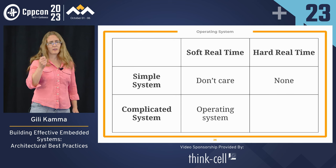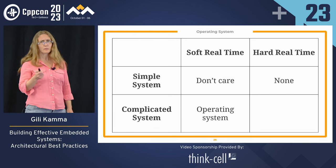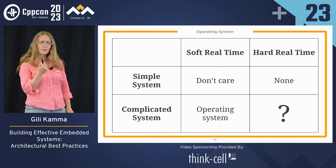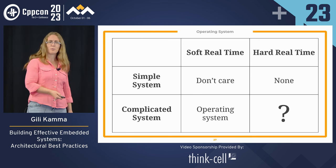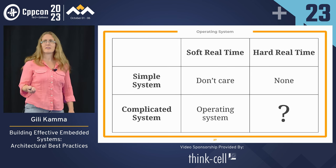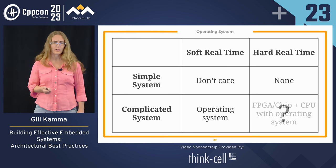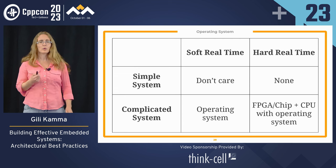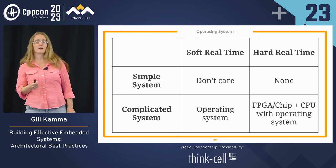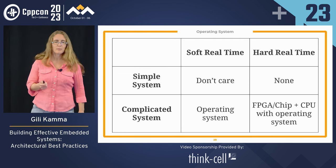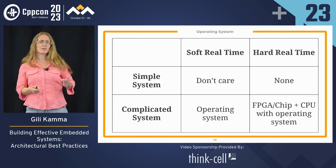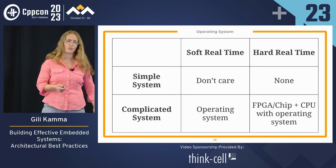Let's try to fill this table. When the system is simple and the requirements are hard real-time, we shouldn't use an operating system. When the system is complicated and the requirements are soft real-time, then we should use an operating system. When the system is simple and requirements are soft real-time, it doesn't matter — do what you prefer. The question is what we do when the system is complicated but requirements are hard real-time. In that case, we use an FPGA or a dedicated chip to handle the hard real-time requirements, and a CPU with an operating system to do the rest: configuration, logic, processes, and communication.